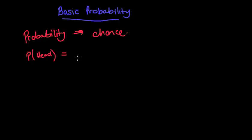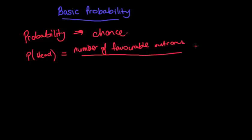First of all, how many heads are there on the coin? So we call this the number of favourable outcomes. Now in this case there is one head, obviously, and it's always out of the total possible outcomes. So how many outcomes are there?